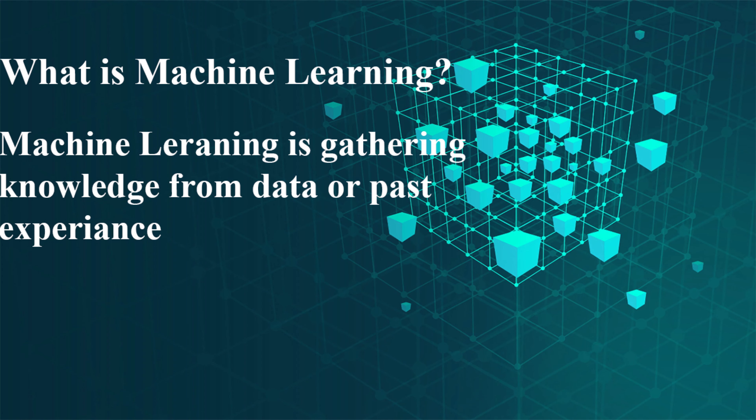So what is machine learning? We can simply say machine learning is gathering knowledge from data or past experience. Machine learning is simply inferring knowledge from data, and the learning step is when we're optimizing a performance criterion. So machine learning is simply programming computers to optimize the performance criteria using example data or past experience.